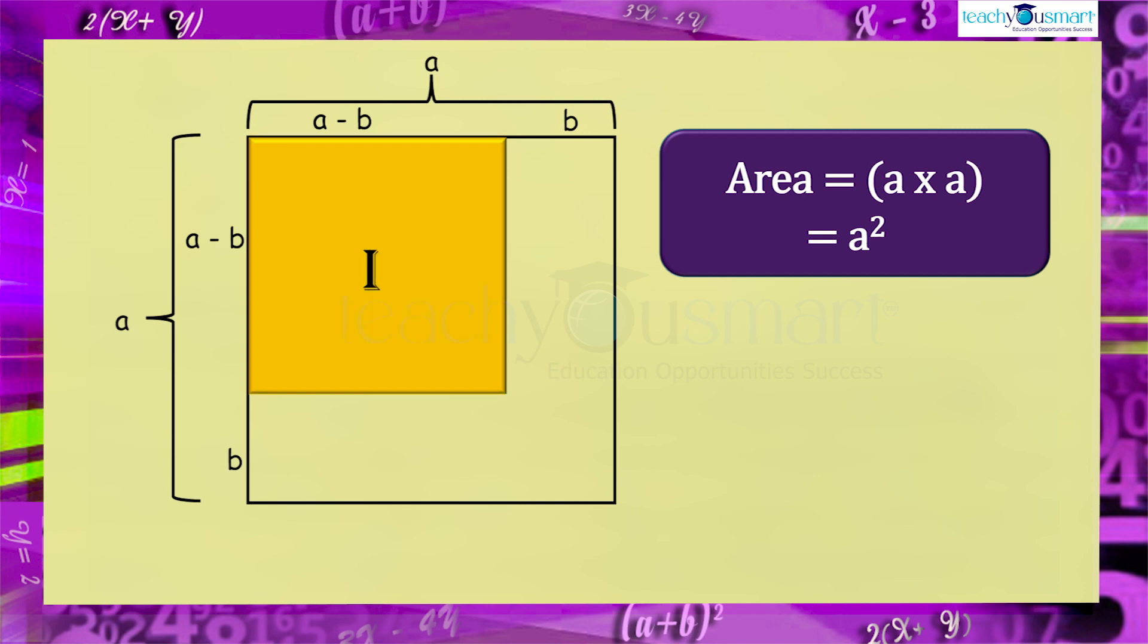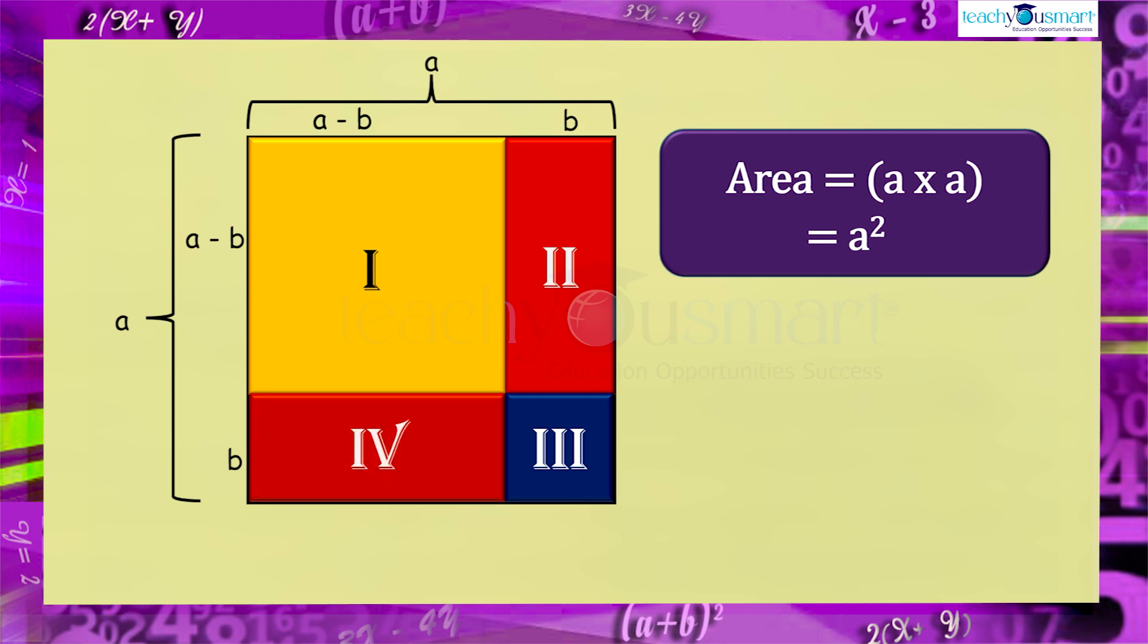Let us try to find the area of a small square with sides a minus b inside the large square. For that, divide the large square into four parts and mark the corresponding sides.